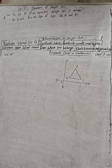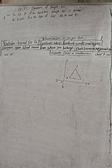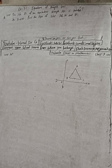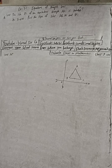Hi class 9 and 10 students, welcome back to Bimalsarji's YouTube channel. This is question number 10, exercise 7.1: equations of a straight line — optional mathematics class 9. Don't forget to check the playlist, it contains many solutions.